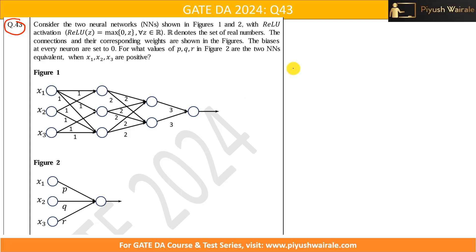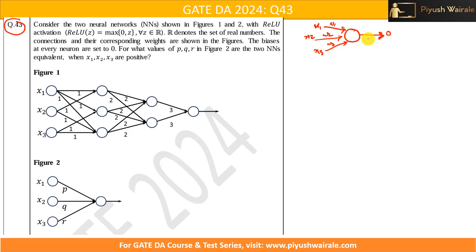Let me discuss the concept first. Suppose I have a neuron — this is basically one neuron — and let's say I have three inputs: x1, x2, x3, with corresponding weights w1, w2, w3. The output of this particular neuron is denoted as o.